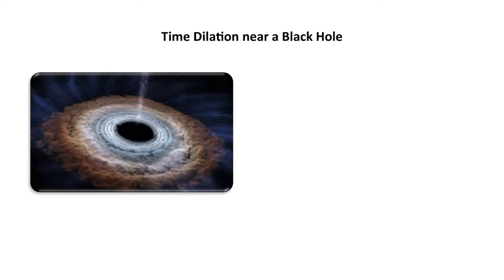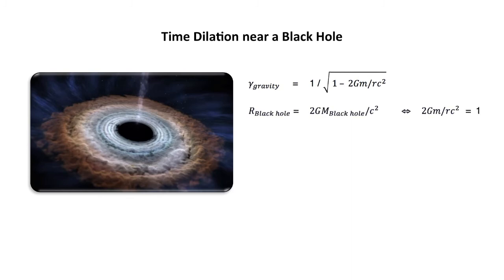Now let's have a look at the time dilation near a black hole. We use the same formula. The radius of a black hole is defined by 2GM — the mass of the black hole — over c². So 2GM over rc² equals 1. If we put this into the formula above, we see 1 minus 1 gives 0, and the square root of 0 is 0, but you can't divide by 0.